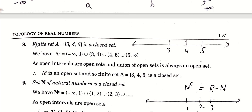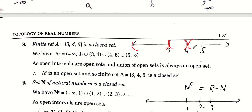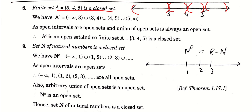Finite set का complement देखो: {3, 4, 5} का complement है minus infinity से 3, open interval (3, 4), open interval (4, 5), open interval (5, ∞)। सारे open intervals हैं, तो सारे open sets हैं। इनकी union भी open set होगी। क्योंकि complement open है, तो set {3, 4, 5} closed हो जाएगा। तो एक basic result बन गया: जो भी finite sets हैं, वो closed होंगे, open नहीं होंगे।